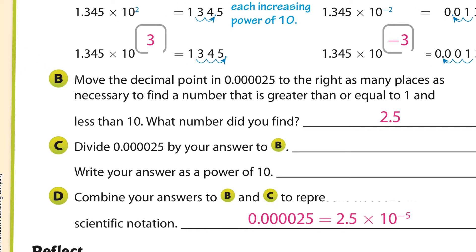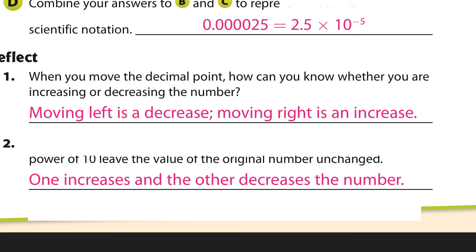So with a given number, we put the decimal between the digits to make a number greater than or equal to 1 and smaller than 10 — for example, 2.5. We divide by our original number and write that as a power of 10. Put it all together: this is the standard notation and this is the scientific notation version. Moving the decimal to the left is a decrease; moving to the right is an increase — one increases and the other decreases the number.